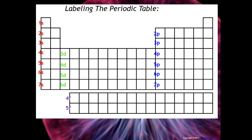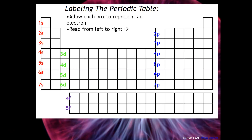This is what is so cool about the periodic table — it can give you clues as to how to write electron configurations, and this is why the periodic table is arranged the way it is. What you're going to do is allow each box to represent an electron.